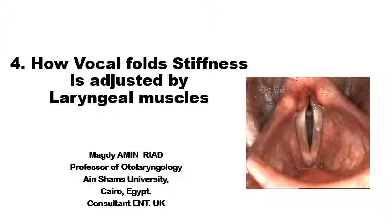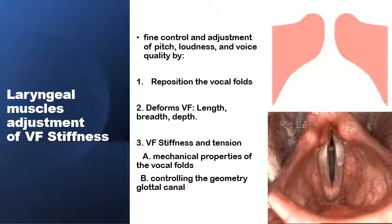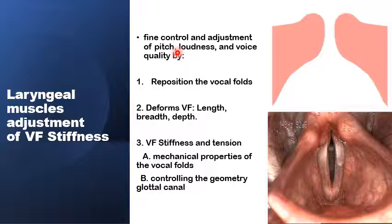As-salamu alaykum. This presentation is on how five different laryngeal muscles can contribute in the modulation and the adjustment of the vocal fold stiffness, and thereby modulating and adjusting the vibrating frequencies of the vocal folds. There are several ways in which the laryngeal muscles can adjust the vocal fold stiffness and thereby control several voice parameters including vocal pitch, loudness, and voice quality.